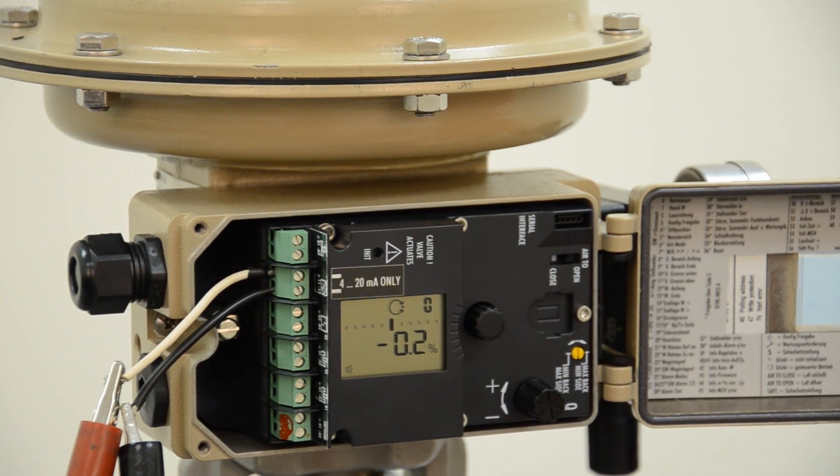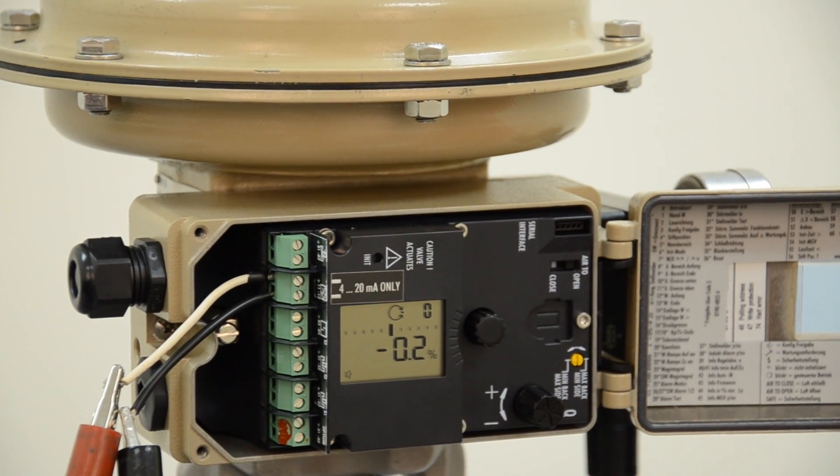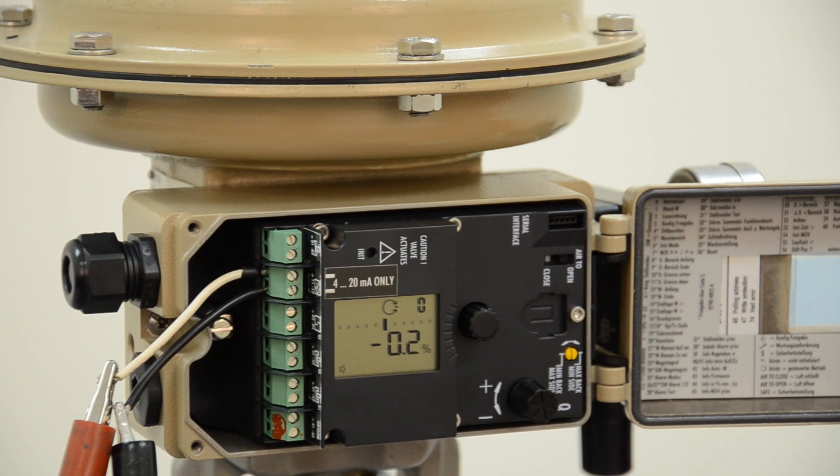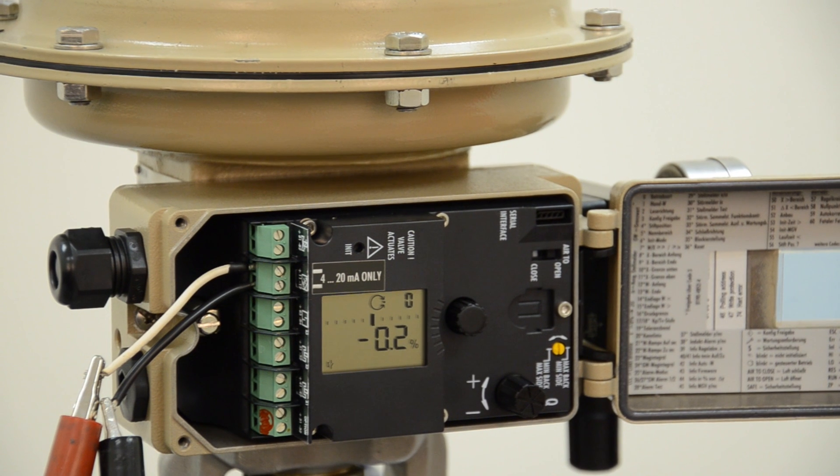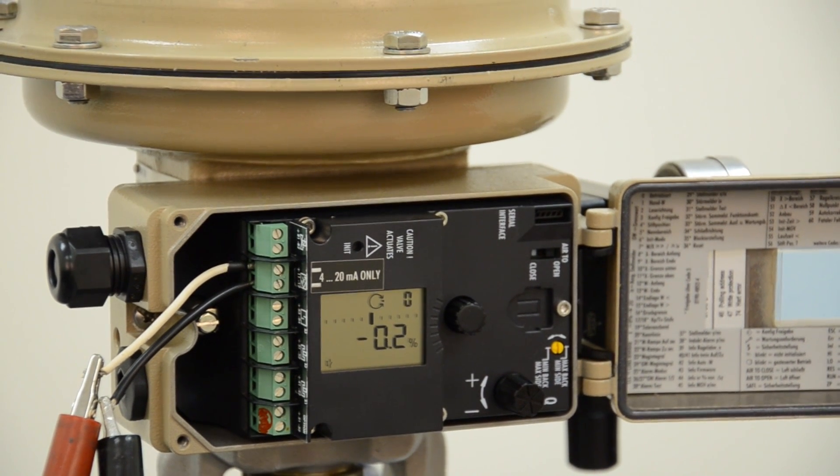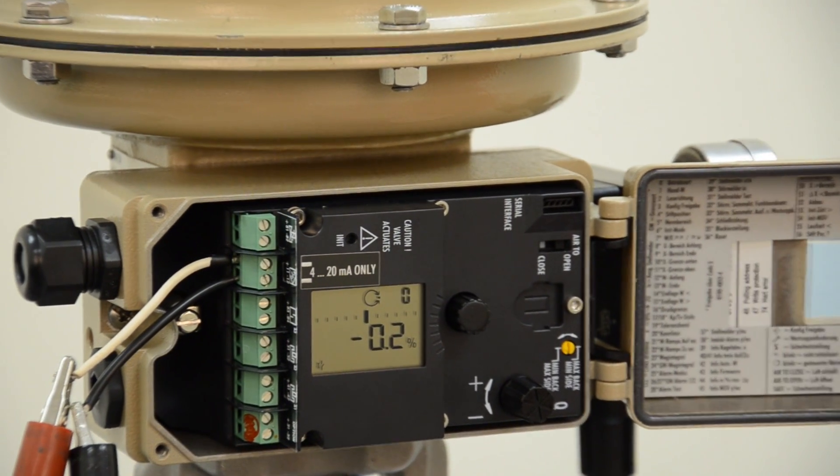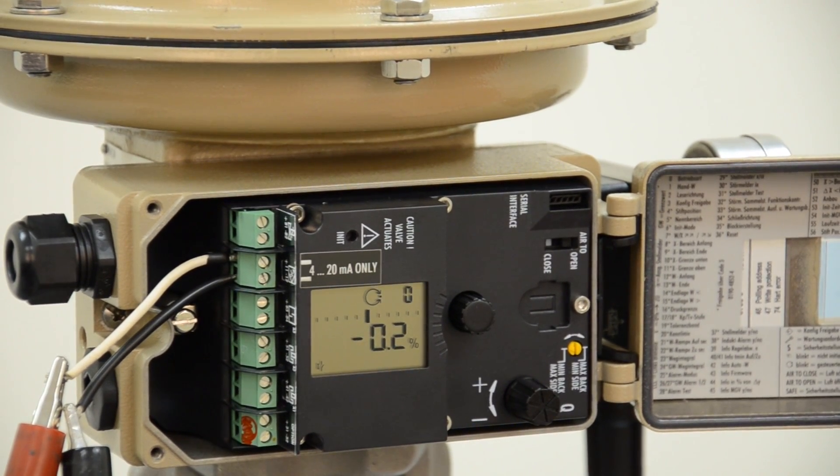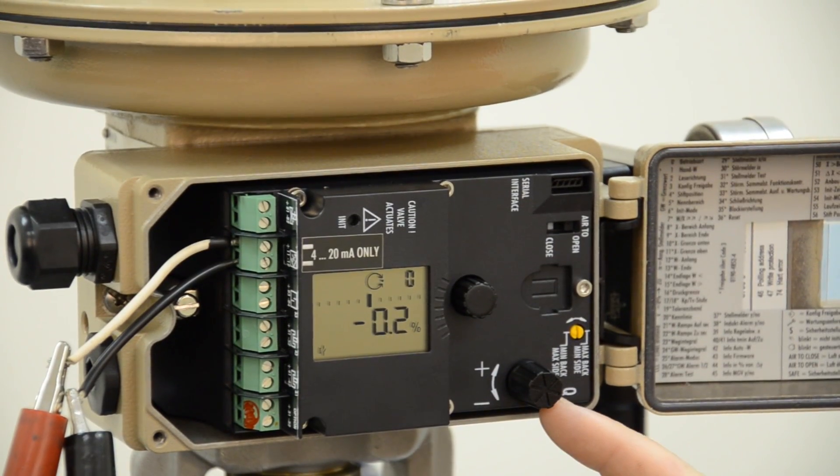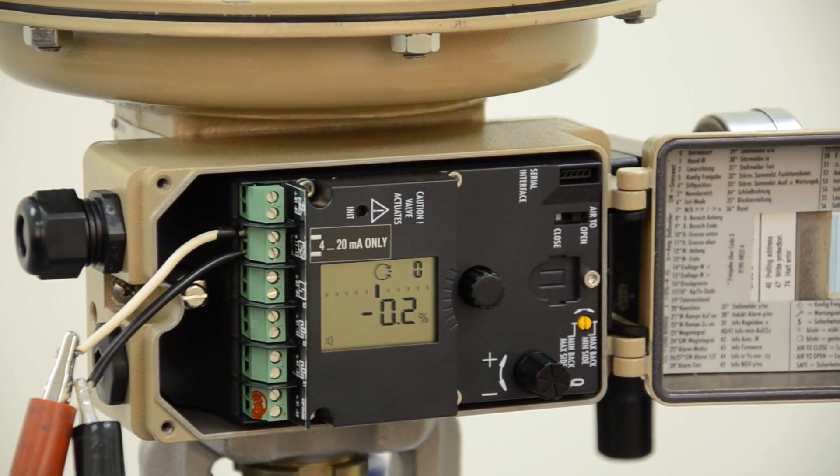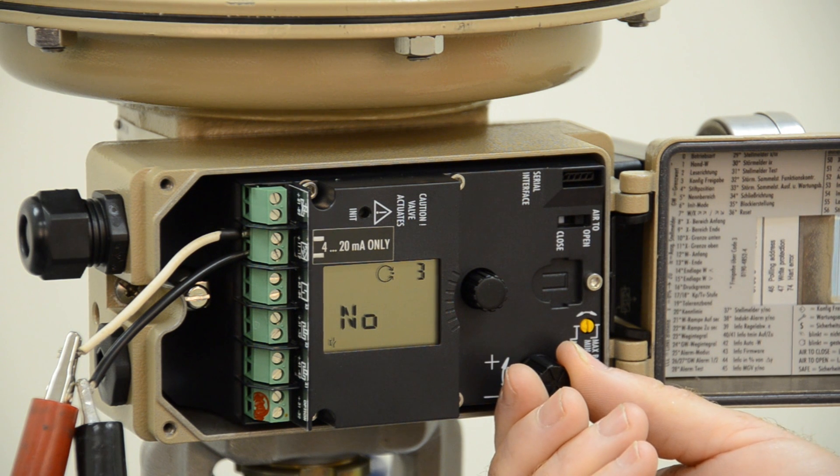Okay, now that the positioner has gone through its self-test and everything seems to be working properly, we can now start the configuration for the control valve that we're working with. In the upper right-hand corner of the display, you'll see a code number. Right now, it is on zero. To change this, we use this rotary push button. The first code we should go to is code number three.